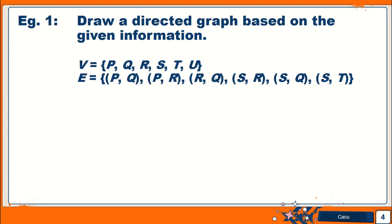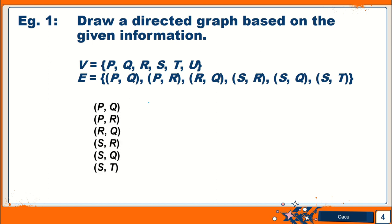Now let us look at Example 1: draw a directed graph based on the given information. We are given the set of vertices P, Q, R, S, T, U — which means we have 6 vertices — and then a set of edges. If we rearrange all the vertex pairs together, we can see that there are 2 edges from vertex P, 1 edge from vertex R, and 3 edges from vertex S. So I'm going to start with the one with the most edges, which is S.